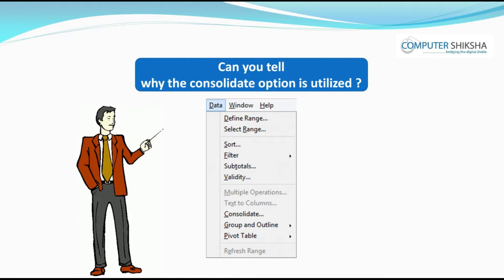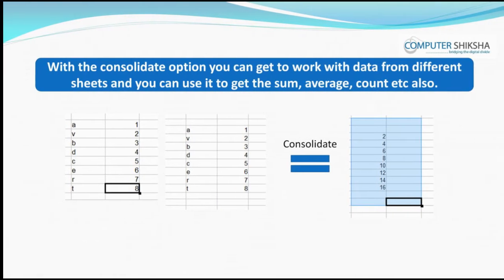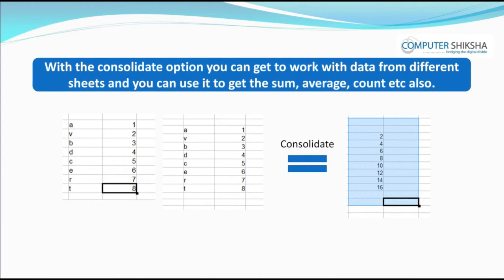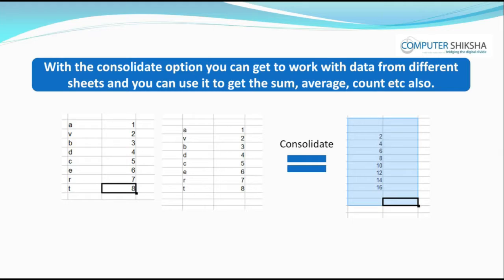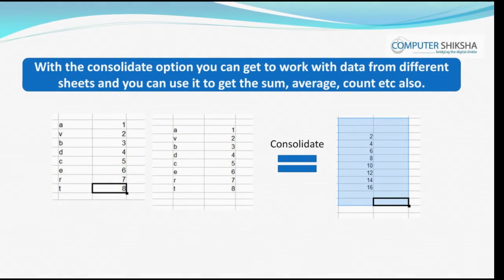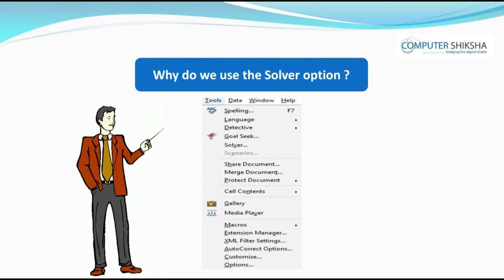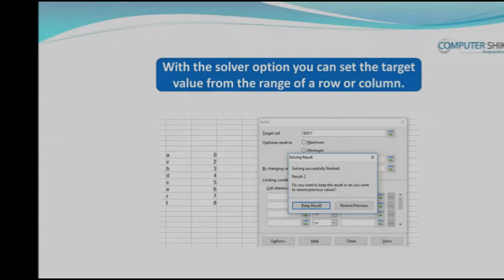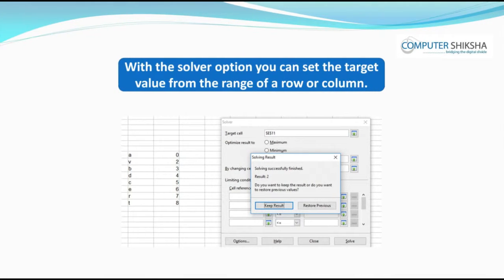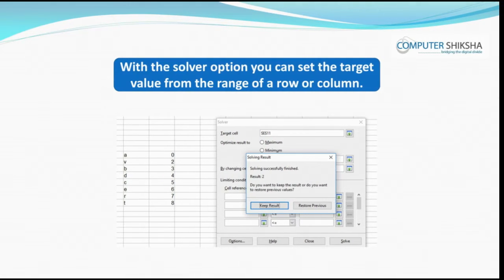Can you tell why the consolidate option is utilized? With the consolidate option, you can work with data from different sheets and use it to get the sum, average, count, etc. Why do we use the solver option? With the solver option, you can set the target value from the range of a row or column.